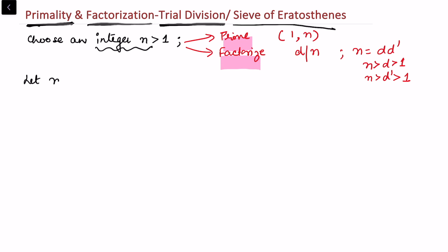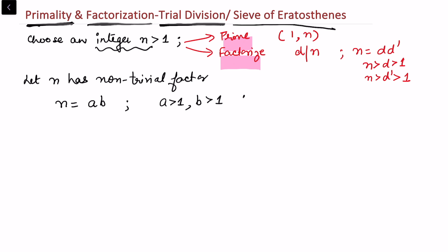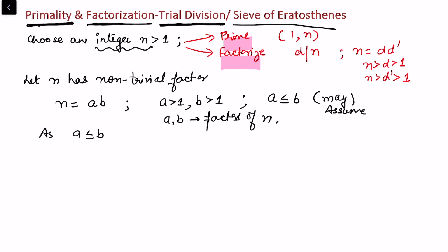Now, let n have a non-trivial factor. Write n = a × b where a > 1 and b > 1. Without loss of generality, assume a ≤ b. Since a ≤ b, multiplying both sides by a gives a² ≤ a·b = n, so a ≤ √n. This means one of the factors must be less than or equal to √n.